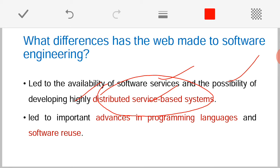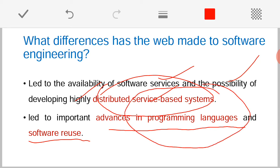The web has also led to important advances in programming languages and software reuse. Because of web applications and web development, so many varieties of programming languages, techniques, and technologies are coming up — for example, AJAX for internet-based applications. Another important thing is software reuse, which is a very important topic in software engineering. Today software is not a single entity — it is a group of many programs, and it is not necessary to design and develop every program from scratch.